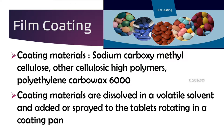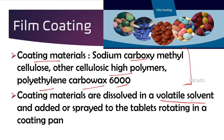First, let us understand what coating materials are used in film coating. The coating materials used in film coating are sodium carboxymethyl cellulose, other cellulosic high polymers, and polyethylene carbowax 6000. These are the main substances used as coating materials in film coating, which provide a film coating to the tablets.